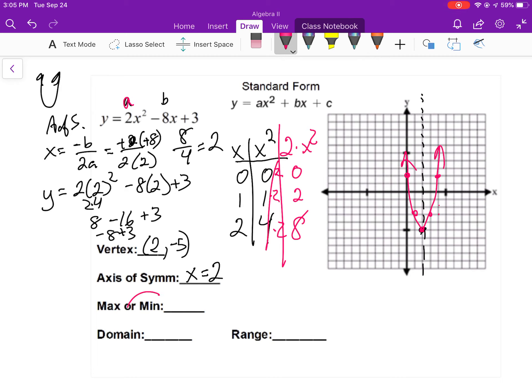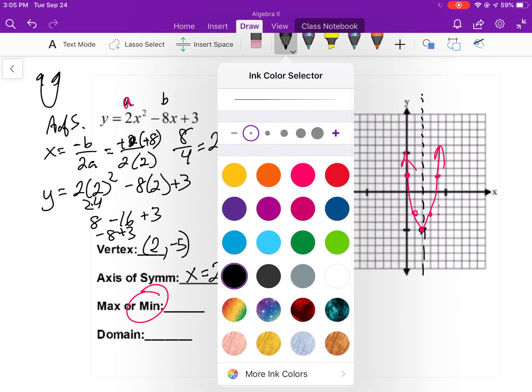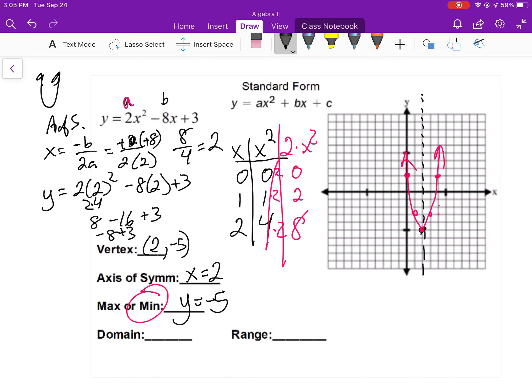Is it a min or a max? It is a minimum, because it's the lowest point in that vertex. And the value of that minimum is always the y value. My range is y is greater than or equal to negative 5. And x is all real numbers.